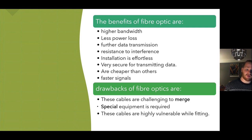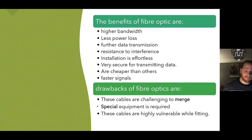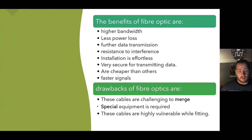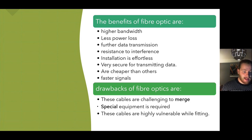Additionally, fibre optics are cheaper than other options and, as light is the fastest speed in the universe, it is faster to transmit data with fibre. The drawbacks are that these cables are challenging to merge, so there can be beam loss within the cable. They also require special equipment to install and manage, which can increase costs, and they are very vulnerable when being fitted.